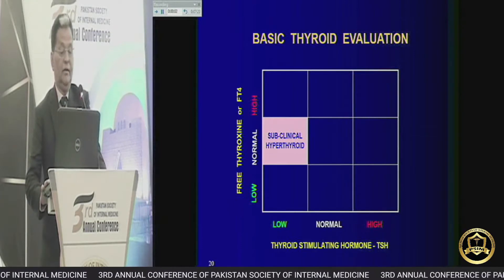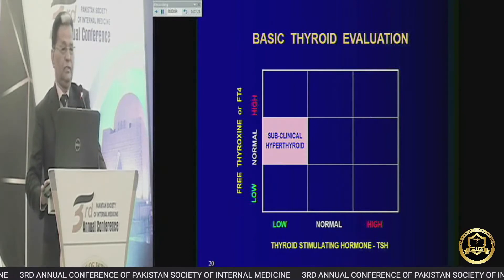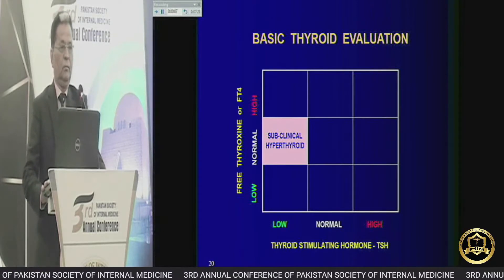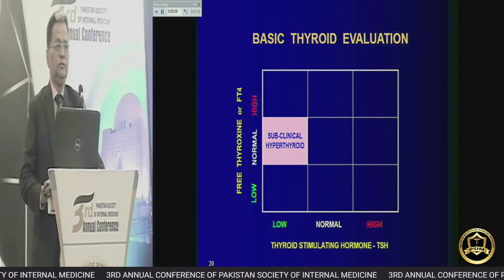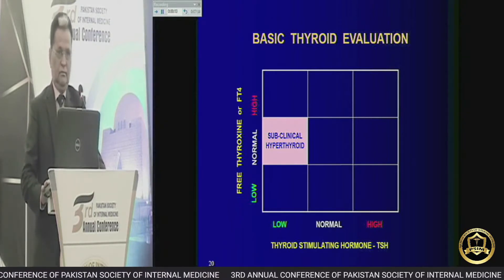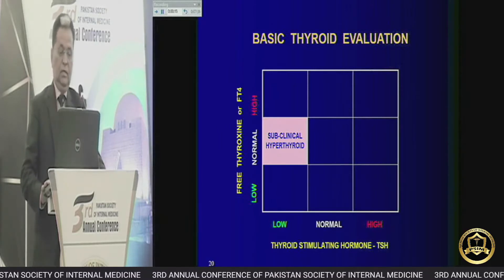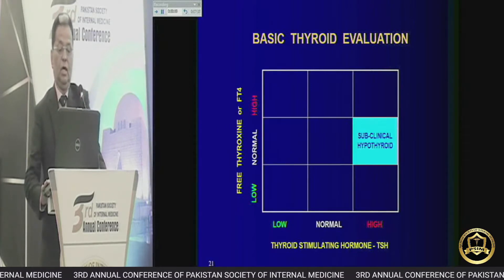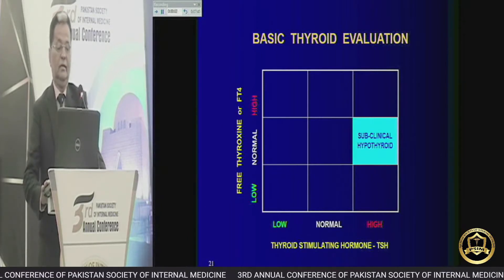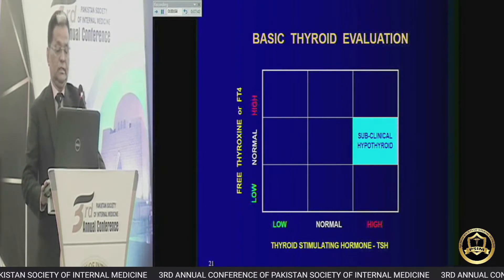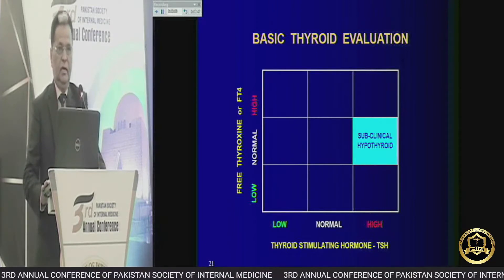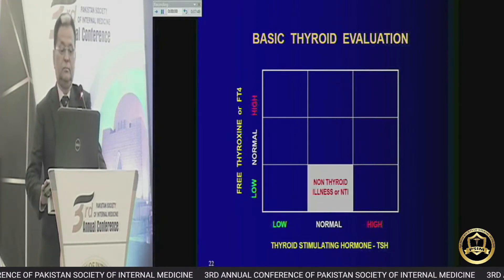I will stress on subclinical hypothyroidism, because in pregnancy we need to intervene in subclinical hypothyroidism for a better outcome. If the TSH is high and free T4 is normal, then it is called subclinical hypothyroidism, and in pregnancy this is important.